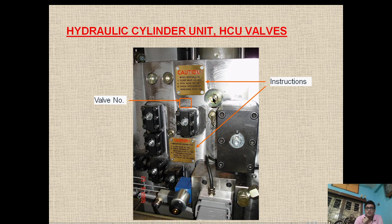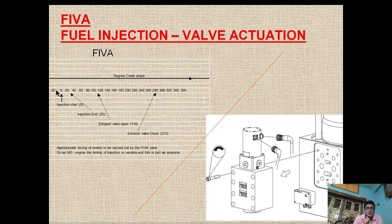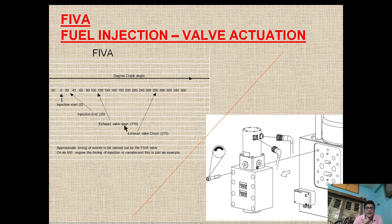I will not explain the FIVA valve in detail here as the video will become too long — I have explained the FIVA valve in a separate video, please go and watch that. This graph shows how the FIVA valve is controlling the actuation: injection is happening at zero degrees of crank angle and ends at 20 degrees. At this point the hydraulic actuator is activated, and the hydraulic actuator of the fuel booster unit is terminated. At 110 degrees the exhaust valve opens via the exhaust valve actuator, and at 270 degrees the exhaust valve closes. This is the approximate timing of events carried out by the FIVA valve.